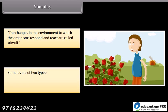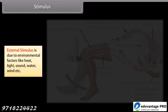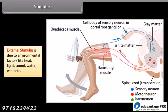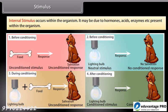Stimuli are of two types: external stimulus and internal stimulus. External stimulus is due to environmental factors like heat, light, sound, water, wind, etc. Internal stimulus occurs within the organism; it may be due to hormones, acids, enzymes, etc., present within the organism.